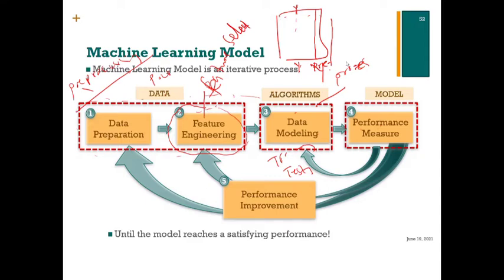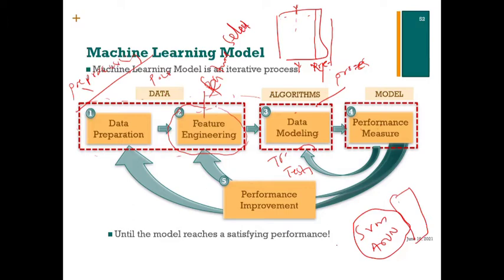It's very rare that you just plug in your data and everything works as you want. No algorithm is inherently better — this is a challenge people face. When a student makes a proposal for machine learning, I recommend being flexible: don't lock yourself into SVM and ANN in the proposal. The data isn't ready yet, and you cannot guarantee a particular model will work for the data you're collecting.